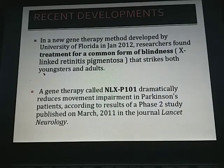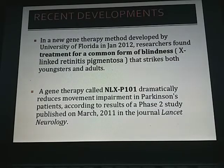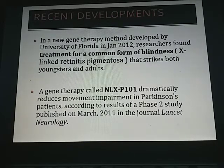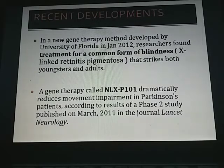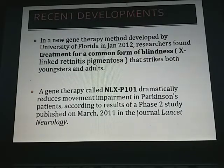Recent developments in gene therapy include a method developed by the University of Florida in January 2012, where researchers found a treatment for a common form of blindness — X-linked retinitis pigmentosa — that strikes both youngsters and adults. Additionally, a gene therapy called NLX-P101 dramatically reduces movement impairment in Parkinson's patients, according to results of a phase two study published in the journal Lancet Neurology.